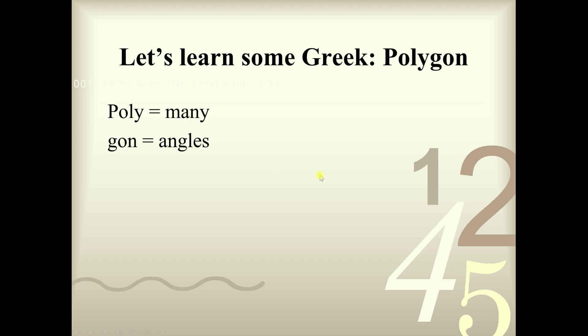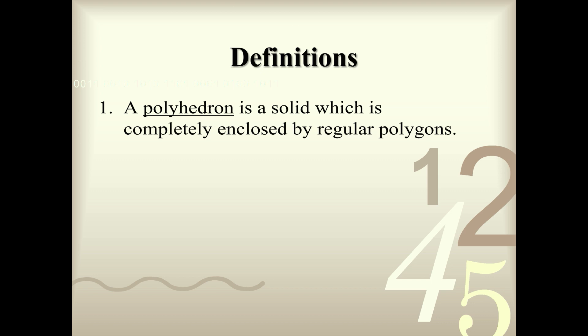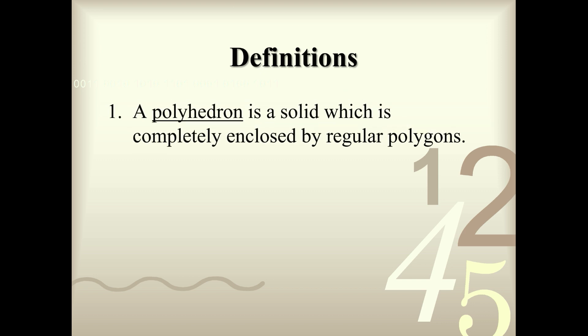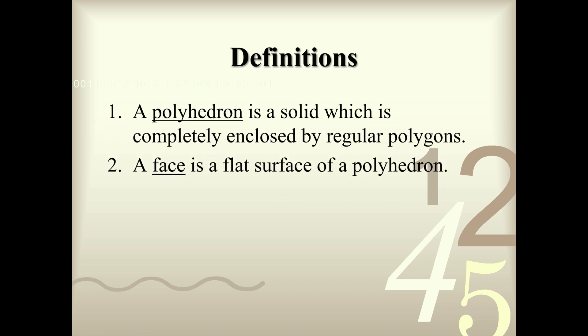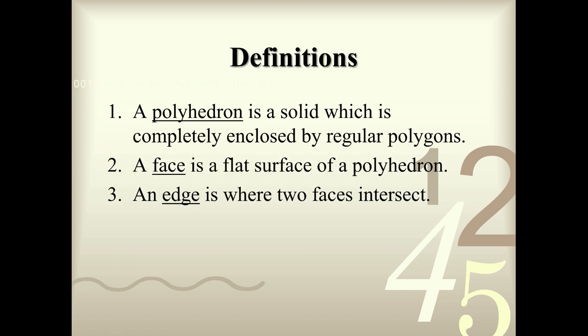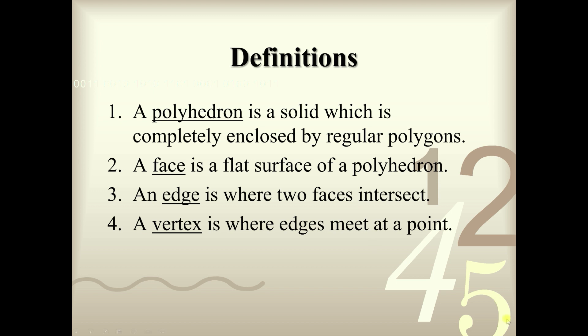Let's define the word polyhedron in more detail. A polyhedron is a solid which is completely enclosed by regular polygons. A face is just a flat surface of a polyhedron. The faces intersect and create an edge, where two faces meet. And when edges intersect, they create vertices — a vertex is where edges meet at a point.